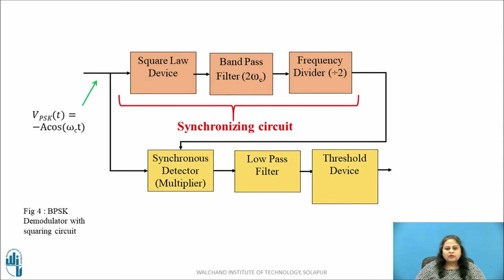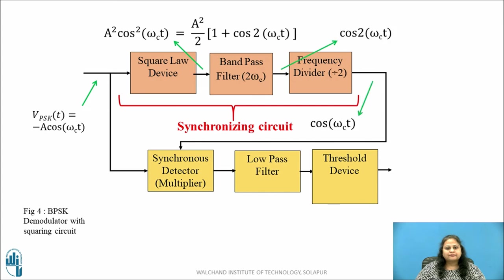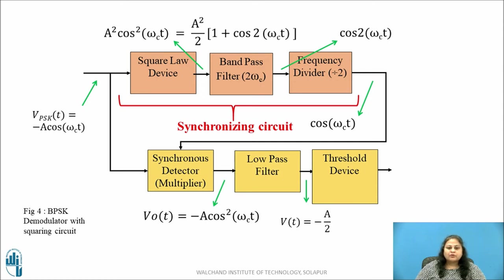Similarly, during the bit slot when the received BPSK signal is −A cos(ωc·t), the extracted local synchronous carrier is again cos(ωc·t). This received BPSK signal and the recovered local carrier are multiplied in the synchronous detector. The output is −A cos²(ωc·t), which on passing through the low pass filter gives a DC term of −A/2. This voltage is less than the threshold voltage, so the output of the threshold device is logic 0. Thus, when the input BPSK signal is +A cos(ωc·t) the output is logic 1, and when it is −A cos(ωc·t) the output is logic 0. This is how the coherent BPSK demodulator works.